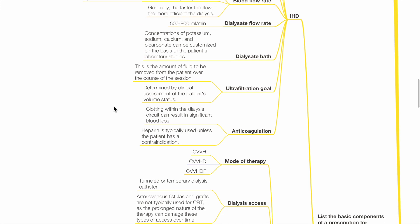Anticoagulation. Clotting within the dialysis circuit can result in significant blood loss. Heparin is typically used unless the patient has a contraindication.